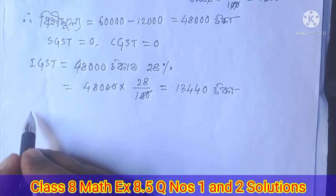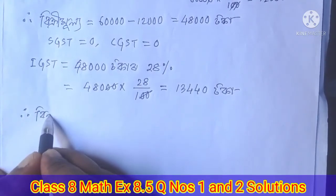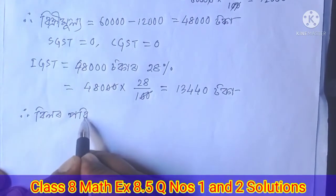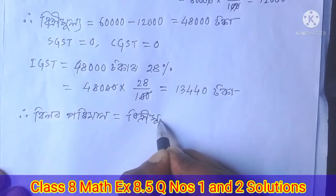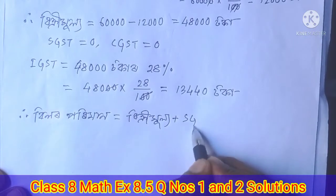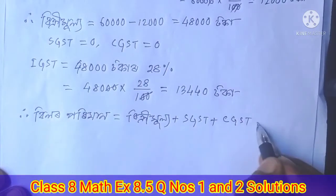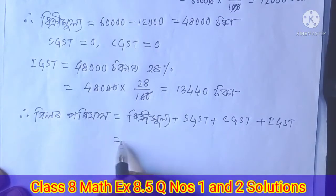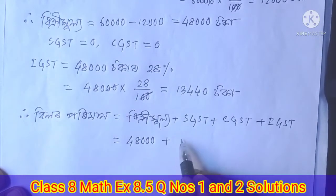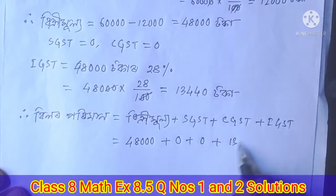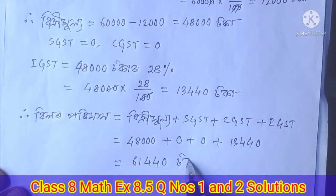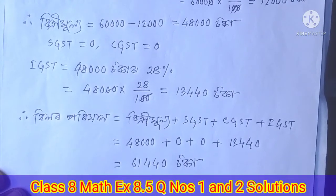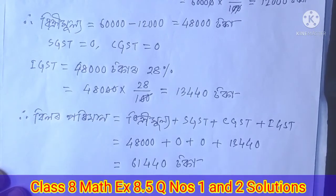We need to calculate the bill amount. The bill includes the base price plus SGST plus CGST plus IGST. The rate is 20%, so we will calculate IGST. Our bill will be approximately 1,00,000 in the final list.